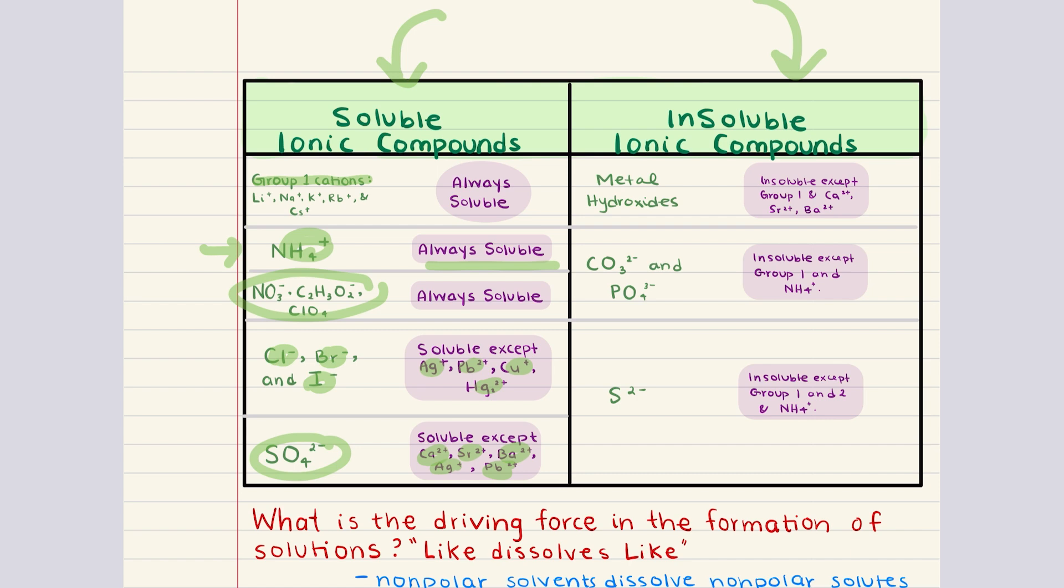First thing to keep in mind here is that all metal oxides are insoluble, with the exception of those formed with alkaline metals and alkaline earth metals as well. But there's only a couple of those, calcium, strontium, and barium. And also ammonium.